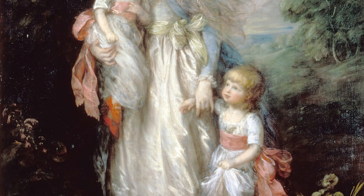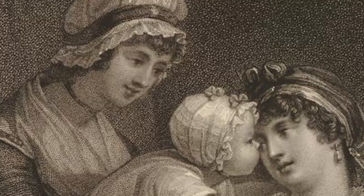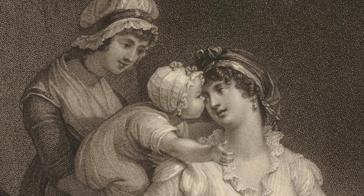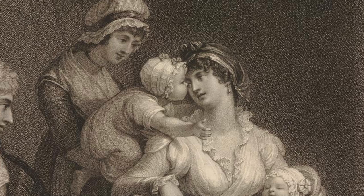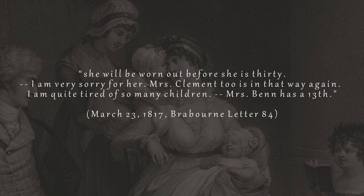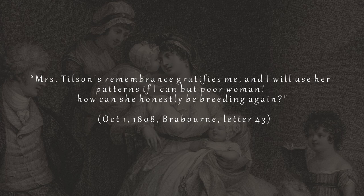Jane didn't approve of short intervals between pregnancies or an excessive number of children in a family, both due to the financial burden on the family as well as the burden on the body of the woman and the risks to her health and the health of her offspring. She wrote: "She will be worn out before she is 30. I am very sorry for her. Mrs. Clement, too, is in that way again, and I'm quite tired of so many children. Mrs. Benn has had a 13th." And: "Poor woman, how can she honestly be breeding again?"